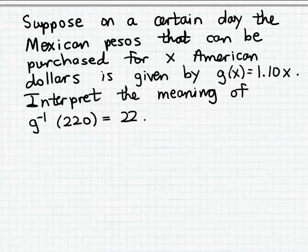So for the function g, the input is the amount of American dollars, and then the matching output is the number of Mexican pesos that can be purchased on this particular day. Of course, exchange rates will fluctuate, but on this particular day, this formula gives us the number of Mexican pesos that can be purchased for x American dollars.